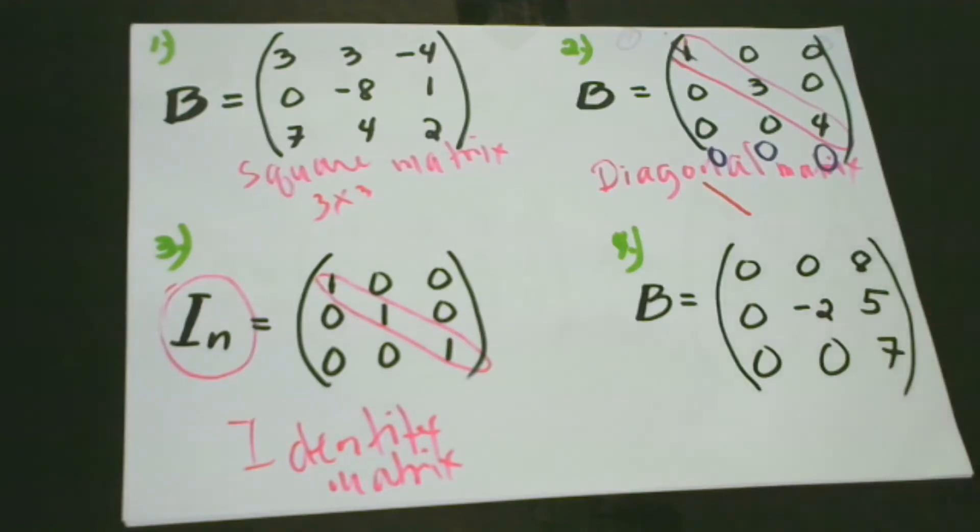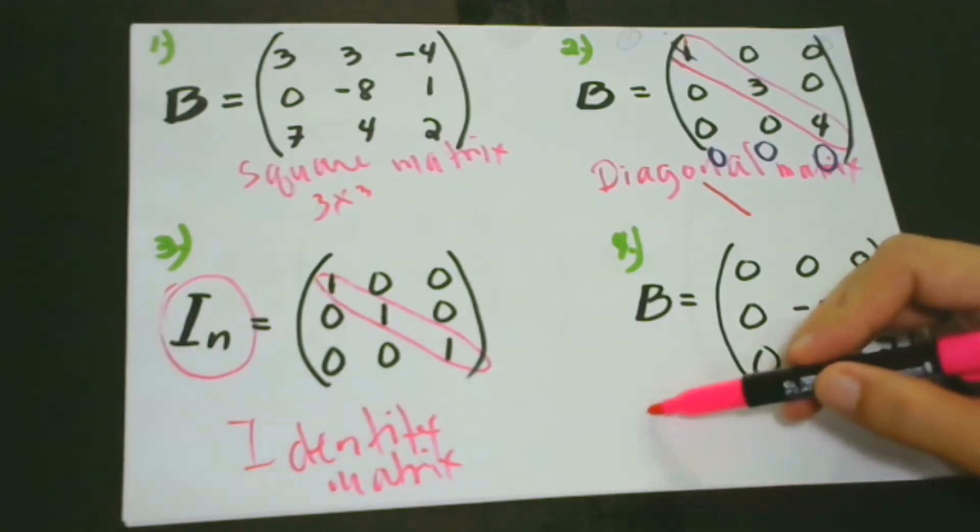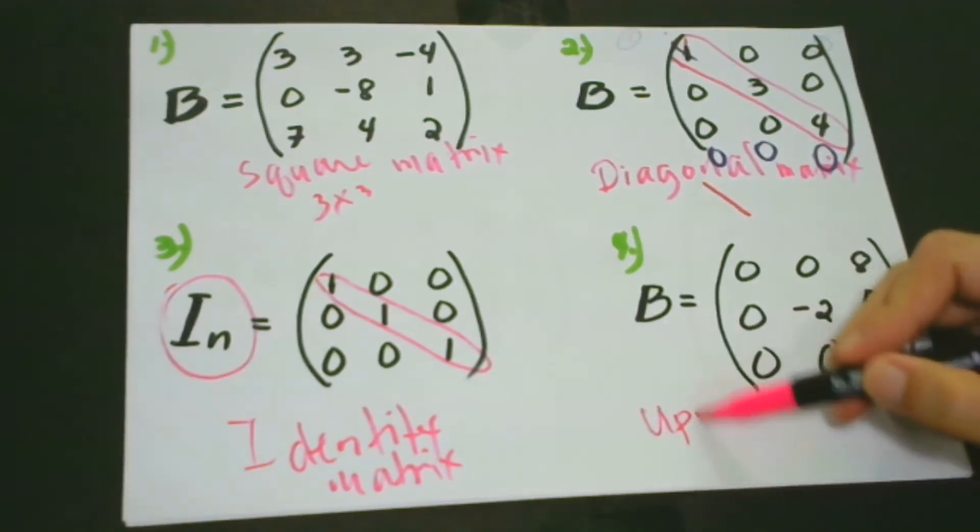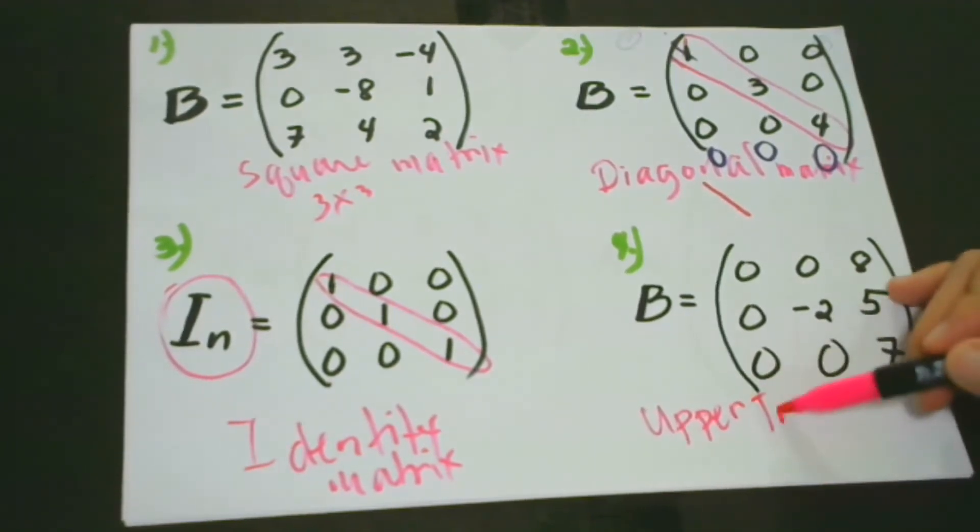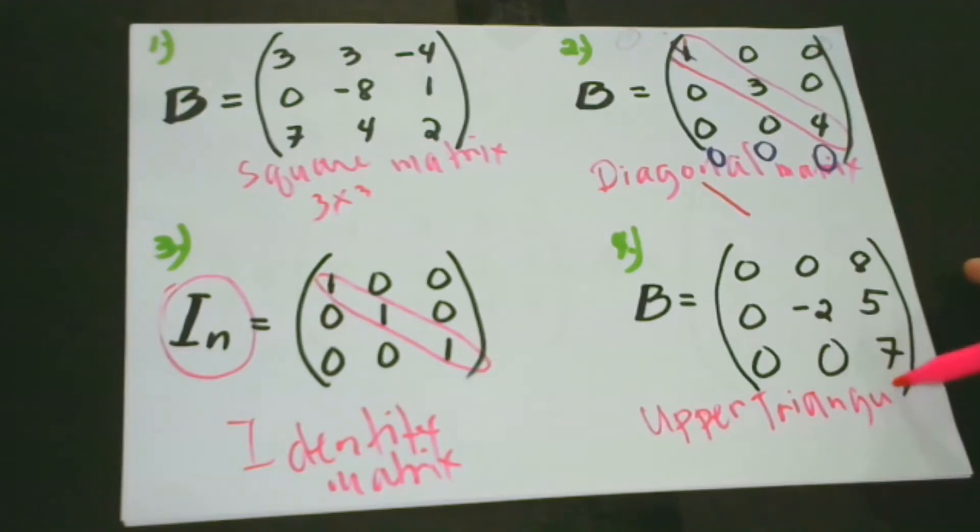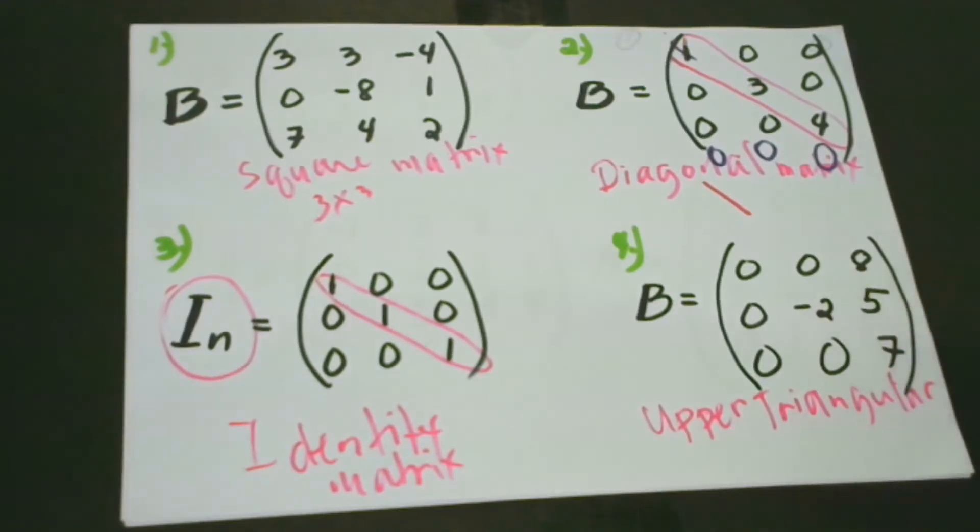The next one is what we call the upper triangular matrix. From the word triangle, triangular matrix. We could say that it really forms a triangle. Let's examine this example for understanding of its properties.